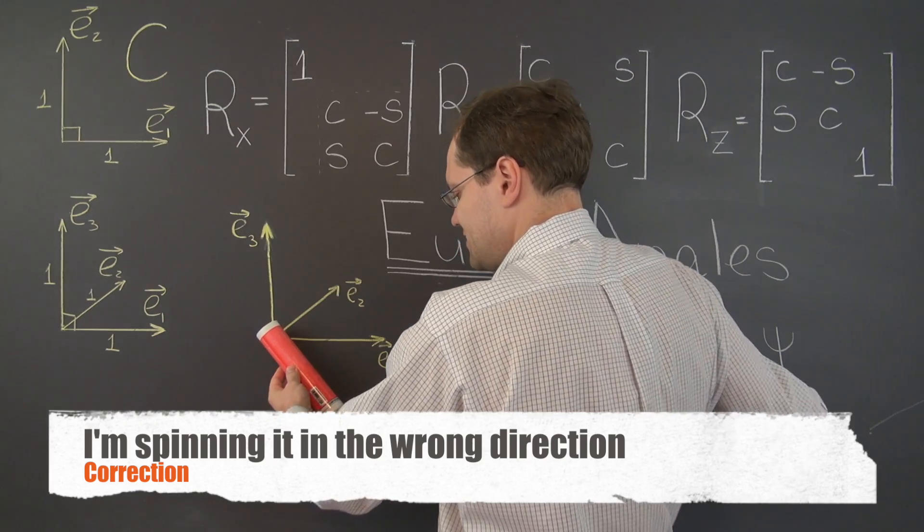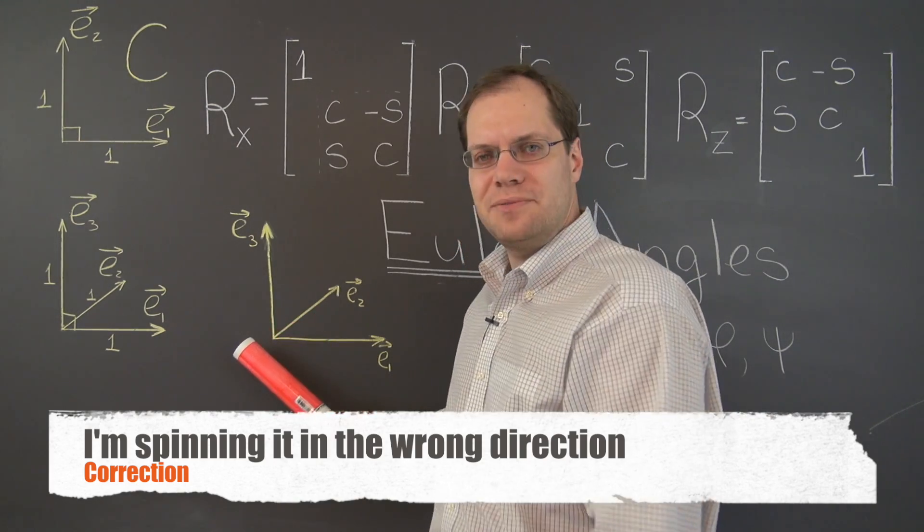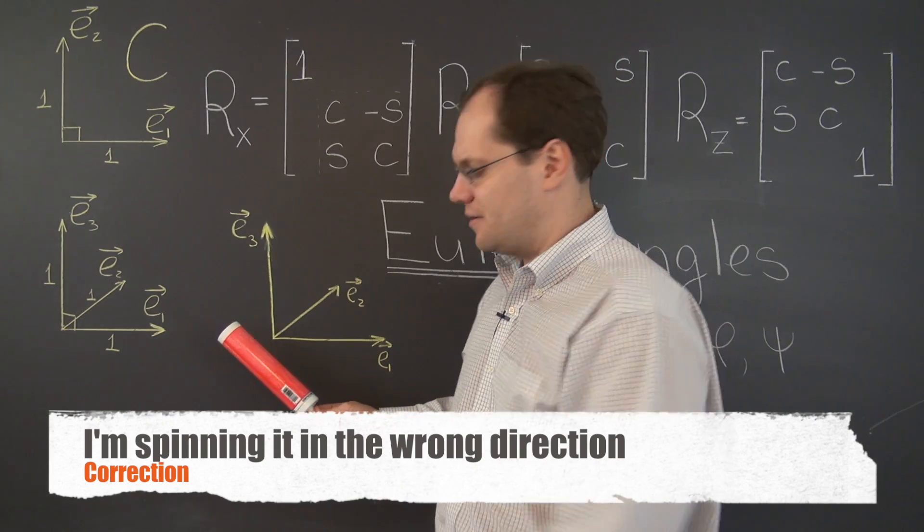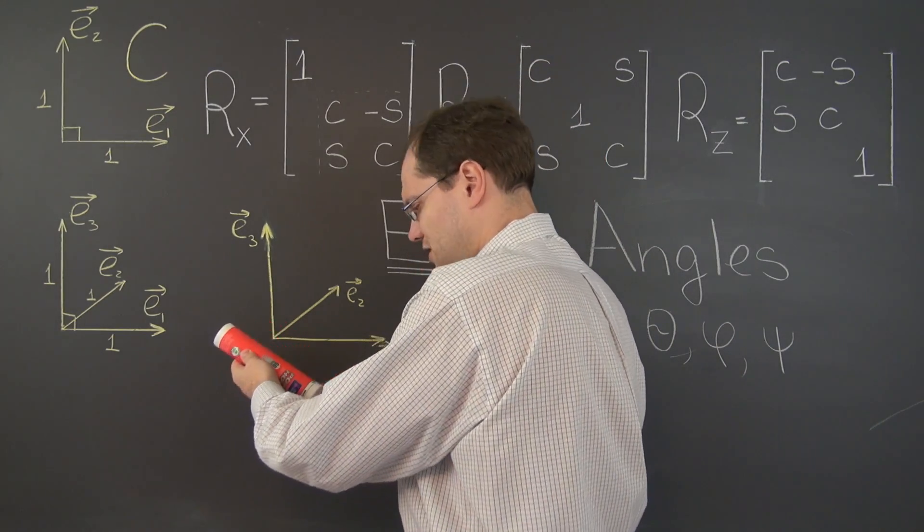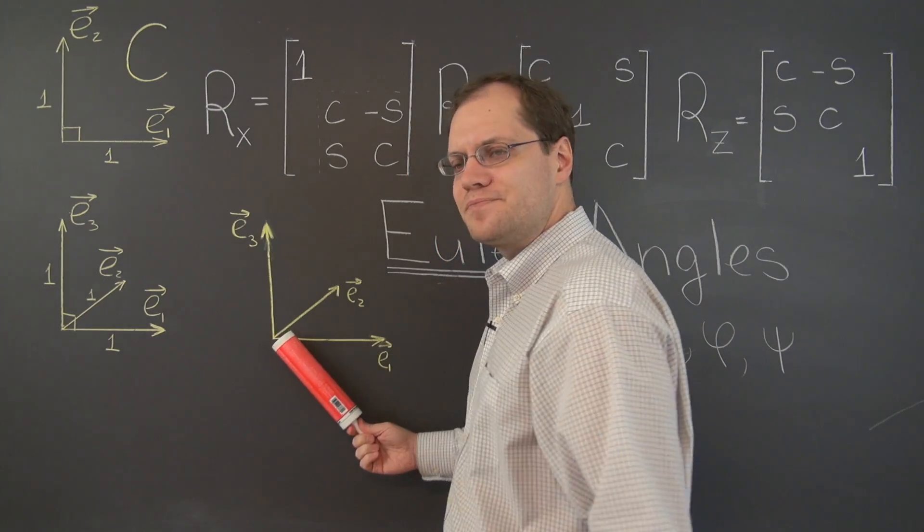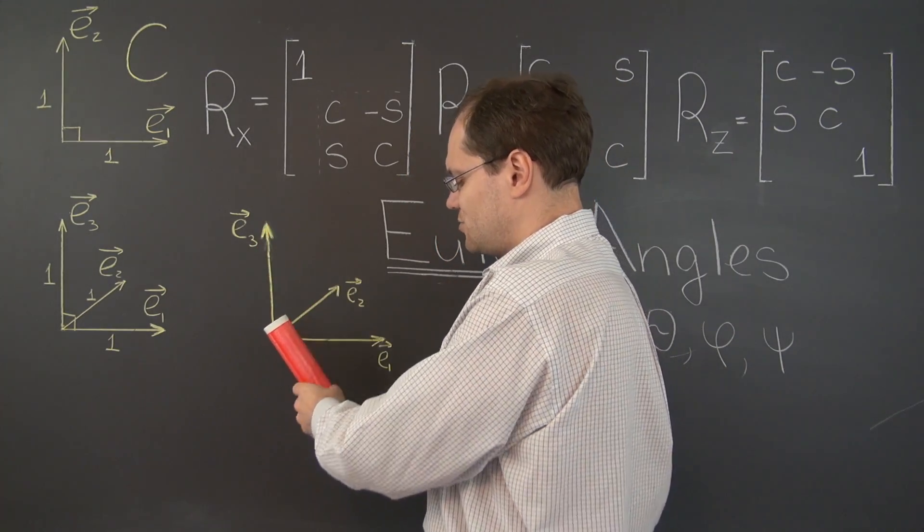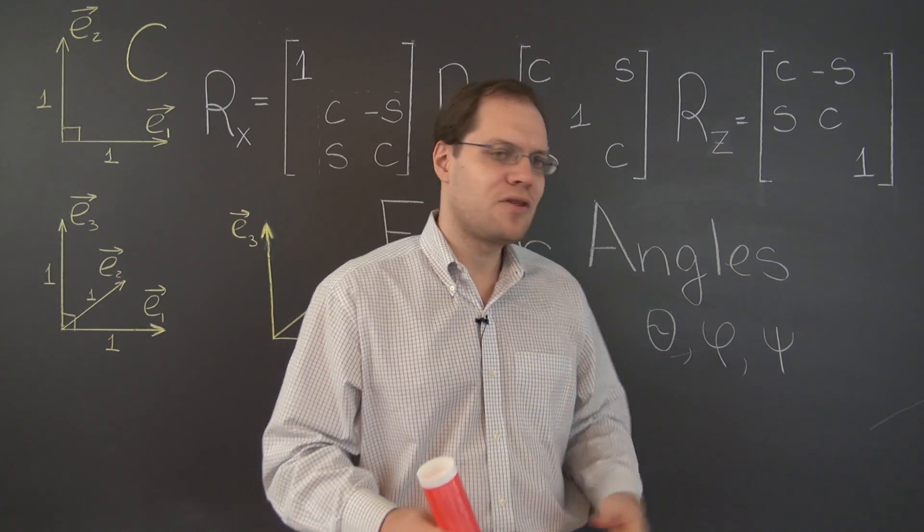So phi is zero, and then this was about, I wasn't really paying attention, but let's say pi. Is that about right? Yeah. From here to here, yeah, right around pi. So 3 quarters pi, zero, pi, okay?